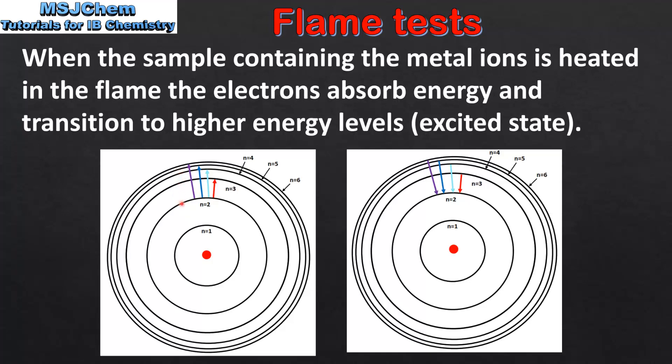Here we can see electron transitions from n equals 2 to n equals 3, 4, 5 and 6. The different electron transitions absorb different amounts of energy.